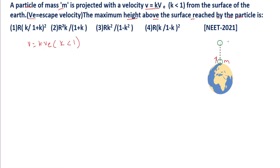It reached to a certain maximum height H and then fell back. He is asking us to calculate the value of that maximum height. So now let small m be the mass of the object, let capital M be the mass of the earth, and let capital R be the radius of the earth. Now here there is one important point to observe: the value of k is less than 1, which means the value of velocity V will be less than escape velocity.